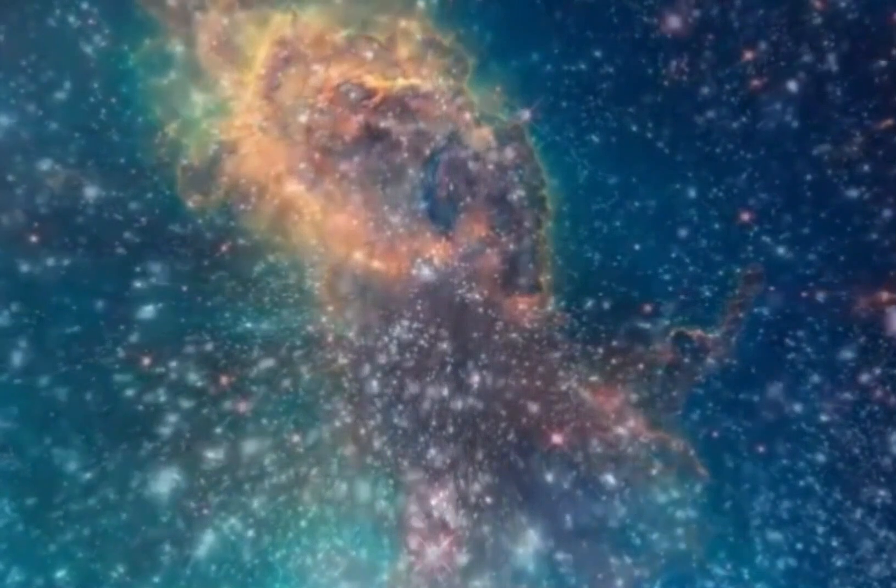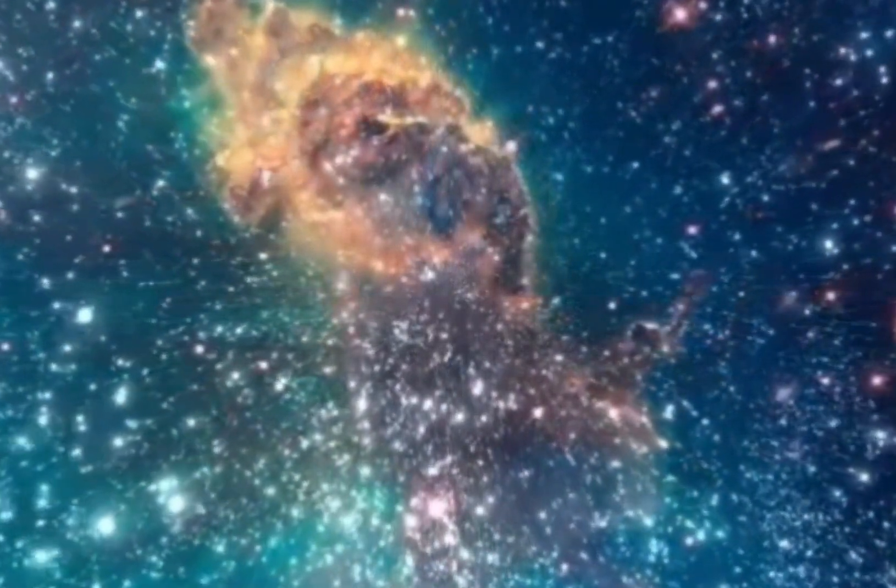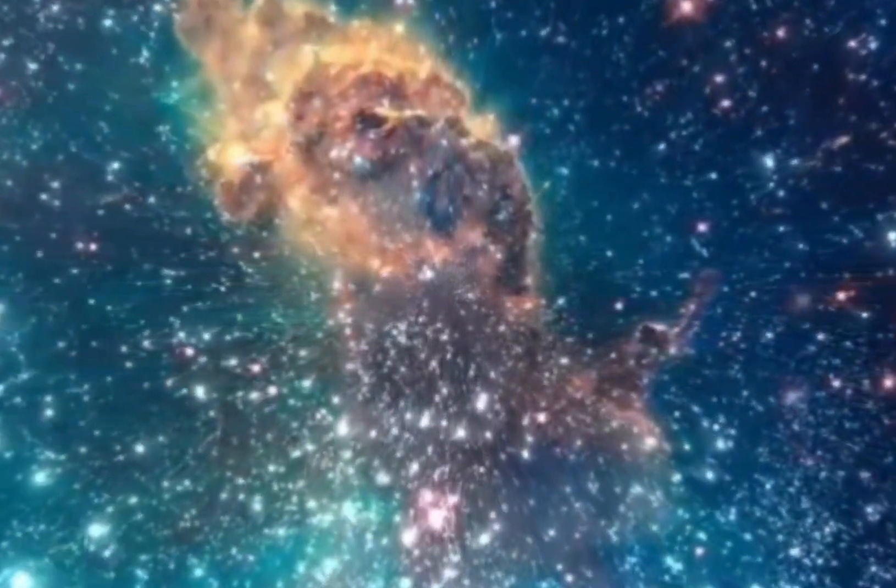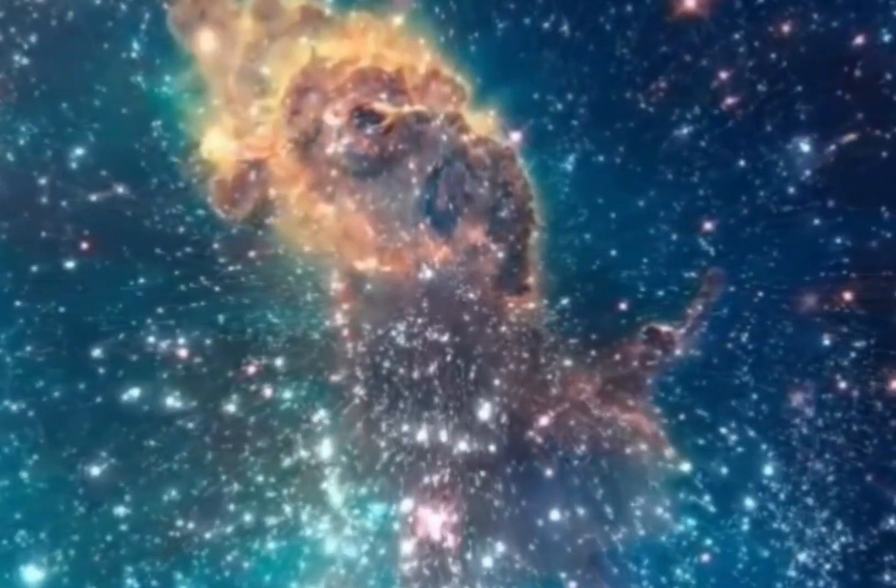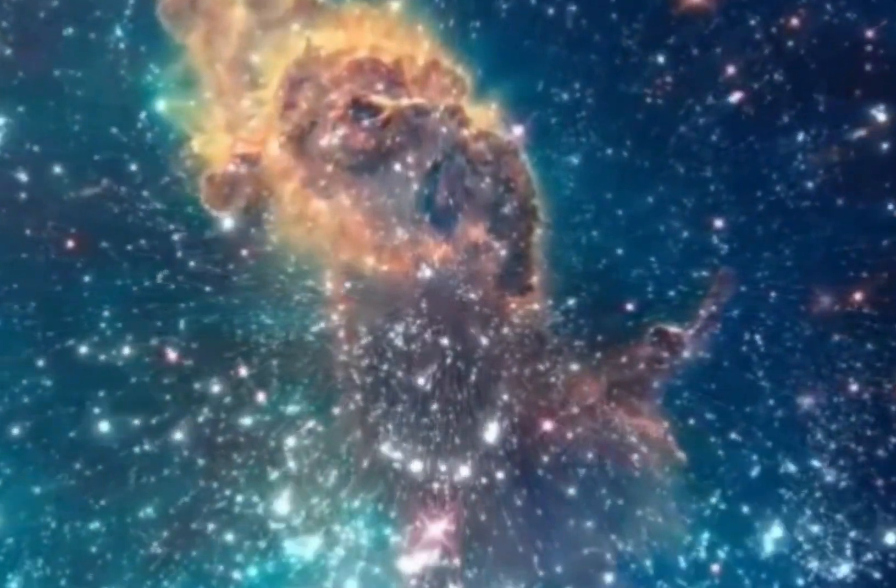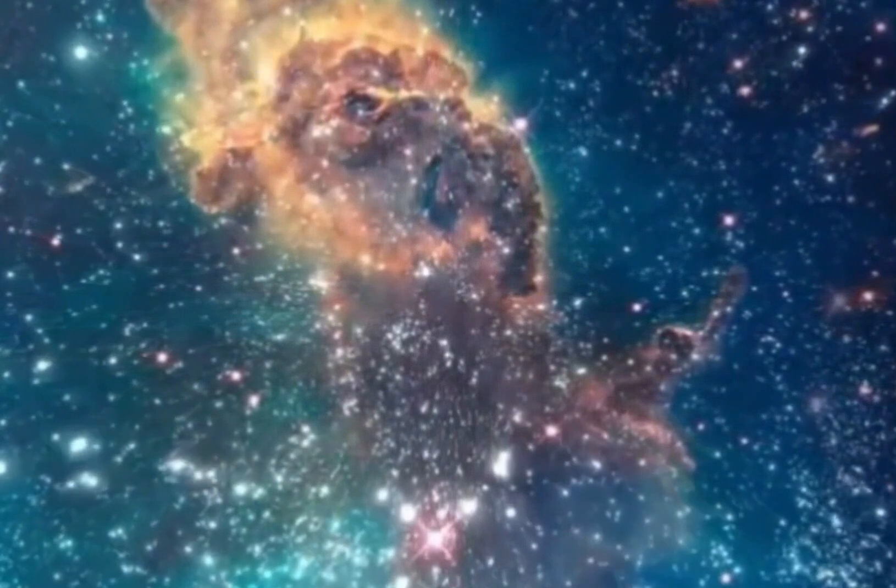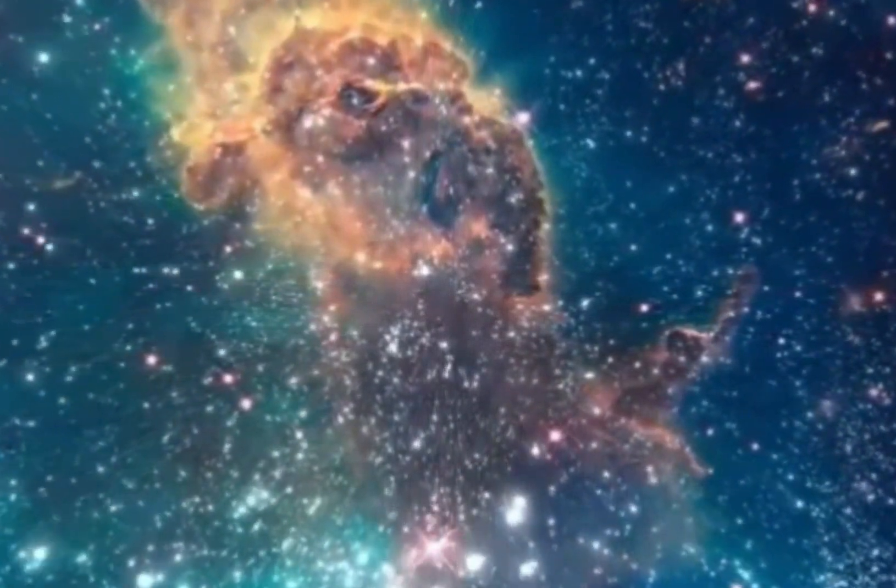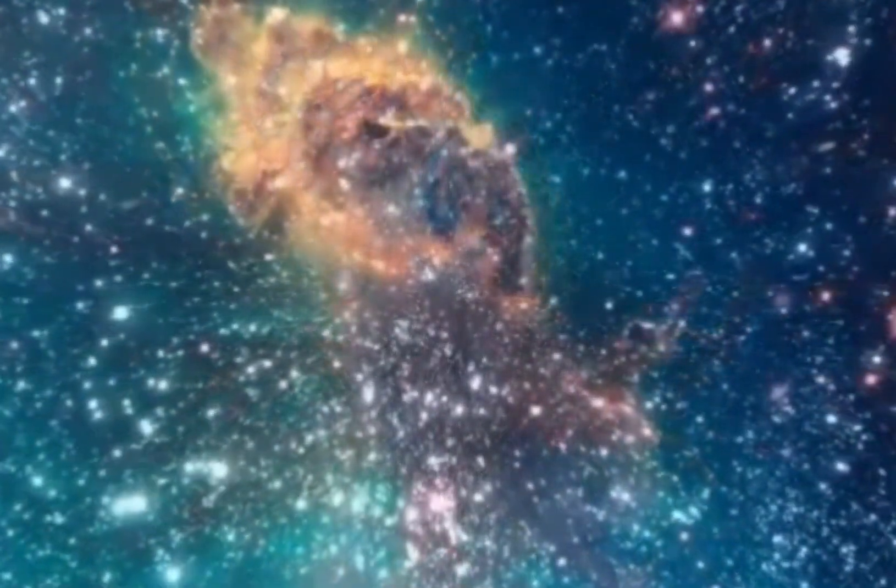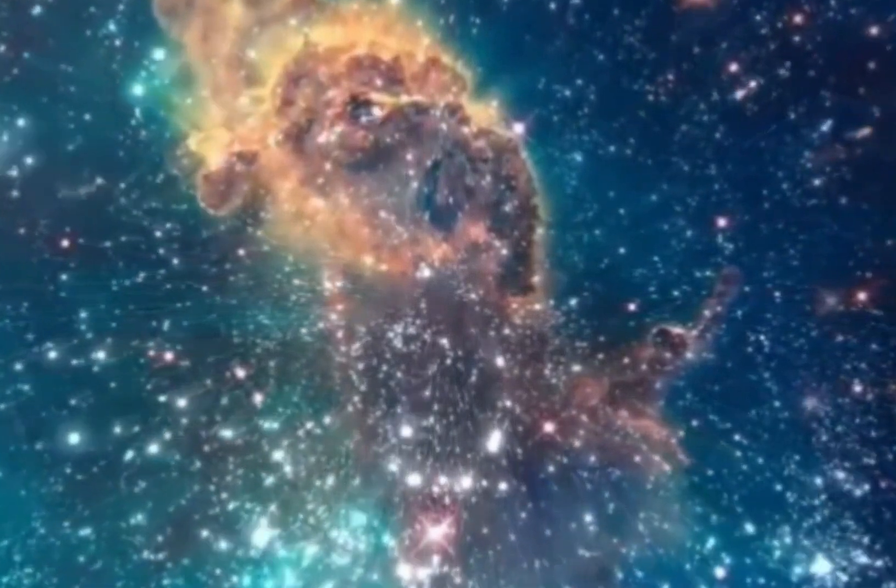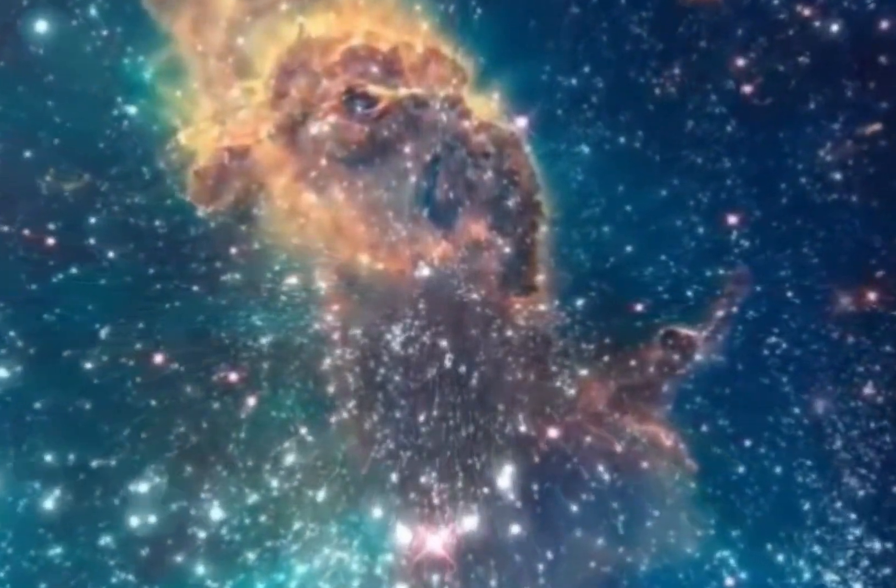The standout feature of Barba 2 is its richness in supergiant stars. The brightest star in the cluster is a yellow supergiant. Additionally, the cluster contains six other supergiants, five red and one blue supergiant. This abundance of supergiants has led to Barba 2 being classified as a supergiant-rich stellar cluster.